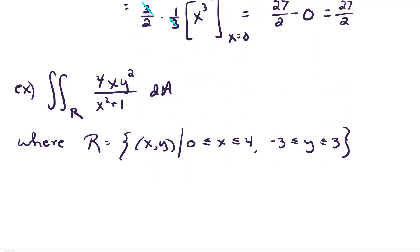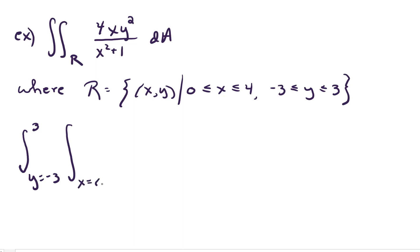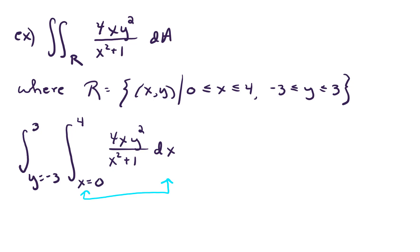Let's do one more example. We have the double integral over R of 4xy² / (x² + 1) dA, where R is the rectangular region from 0 to 4 in the x direction and negative 3 to 3 in the y direction. Let's set this up: the outer integral is y equals negative 3 to 3, the inner integral is x equals 0 to 4, and our integrand is 4xy² / (x² + 1) dx, with dy on the outside — the variables must match their respective integral signs.